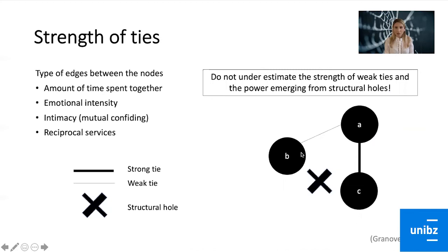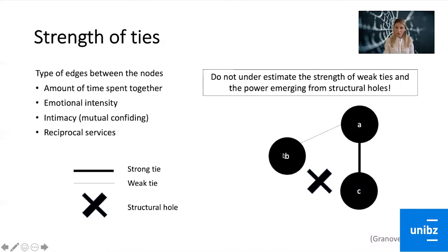Within a network you can also represent the strength of a tie using bold or thinner connections. The strength of a tie represents the amount of time two actors spend together, the emotional intensity, the level of intimacy, and the reciprocal services exchanged. For example, A and B might be connected by a weak tie, while A and C are connected by a strong tie, and between B and C there is no tie. We should not underestimate the strength of weak ties.